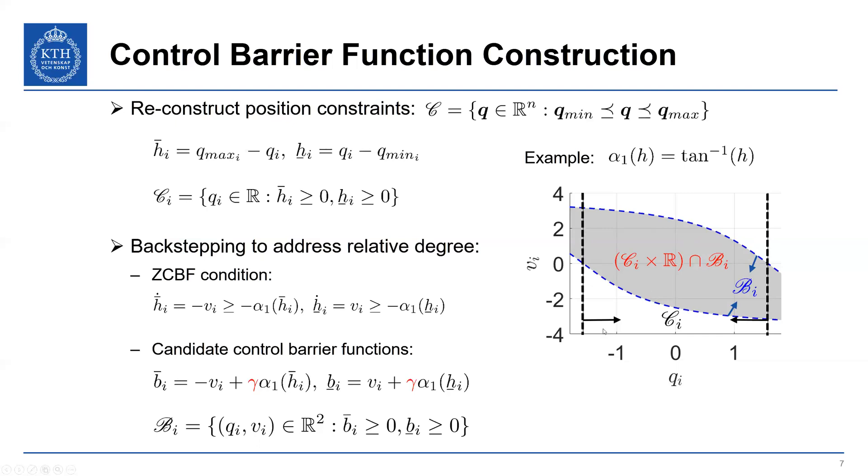Notice that this is a compact set that we will be looking over. And one more thing to point out is I've included a design parameter gamma into the control barrier functions themselves. This will be used to help design the control barrier functions.